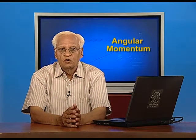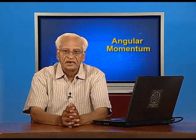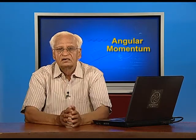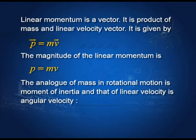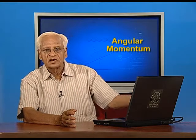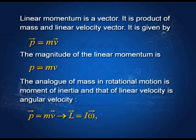Linear momentum is a vector — it is the product of mass and linear velocity. The magnitude of linear momentum is simply mv. The analog of mass in rotational motion is moment of inertia. Mass is replaced by moment of inertia and velocity is replaced by angular velocity, so that p = mv in linear motion is replaced by L = Iω, where L is called the angular momentum.